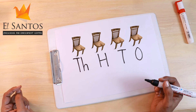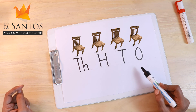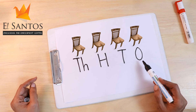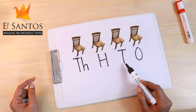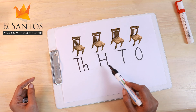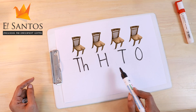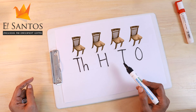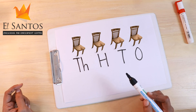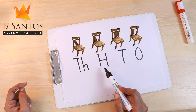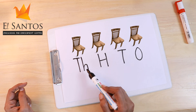Let's go over them again: the ones place, tens place, hundreds place, and the thousands place. Learn these place names like a chant or a rhyme: ones, tens, hundreds, thousands.